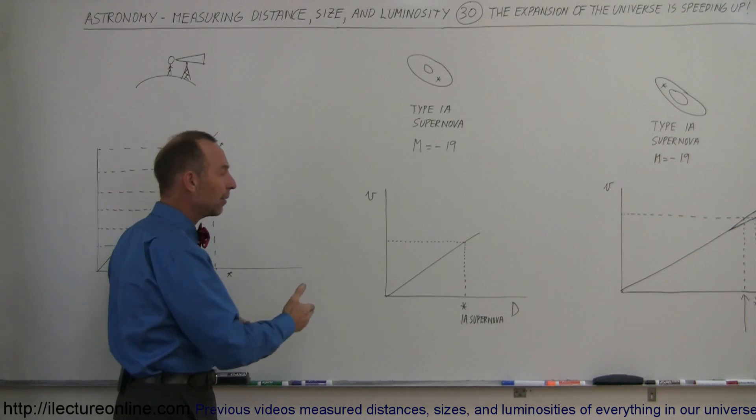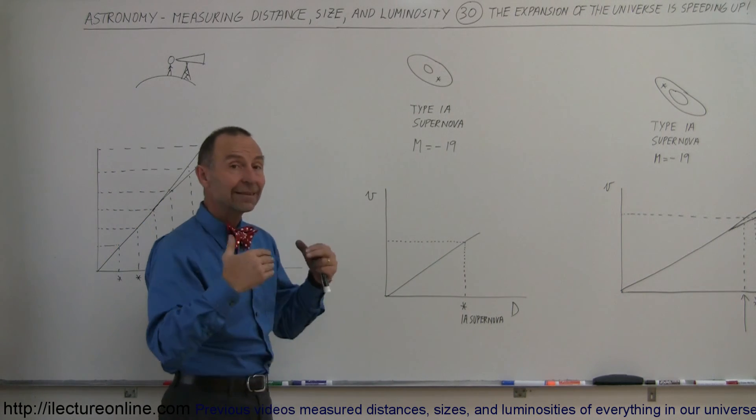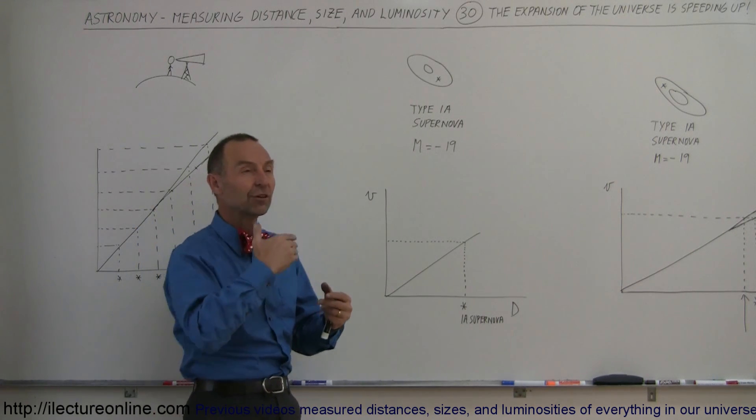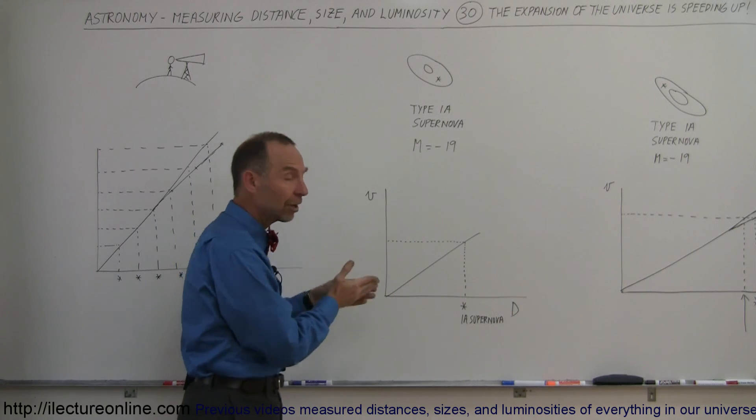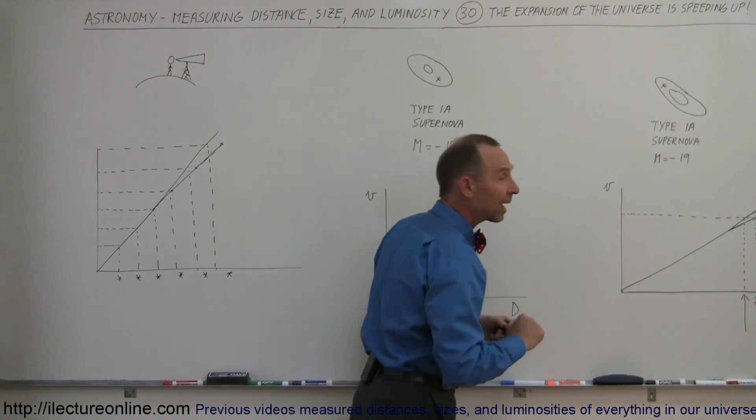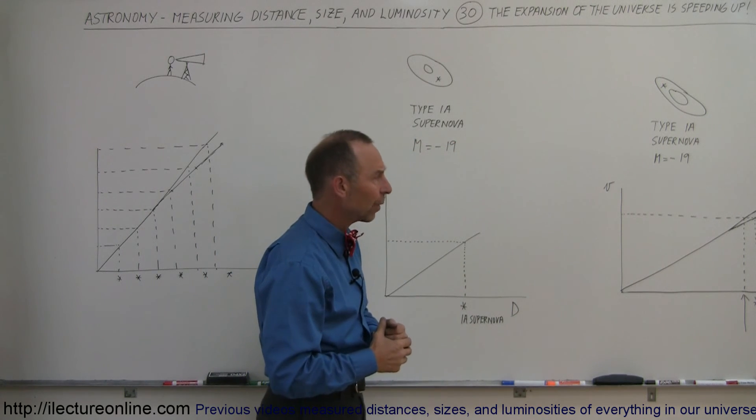And again, this was discovered by comparing the Hubble constant, which we found using Cepheid variables and type 1a supernova that are close by, to the type 1a supernova that are far away. All of a sudden, we realize that the Hubble constant isn't constant at all, but decreases farther back in time, which means the universe is expanding at an accelerating rate. That is quite amazing.